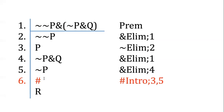Now, once I have pound, that's like the license to write whatever I want. I can do contradiction elim and just write my conclusion that I want. So I get R, and now I'm done.